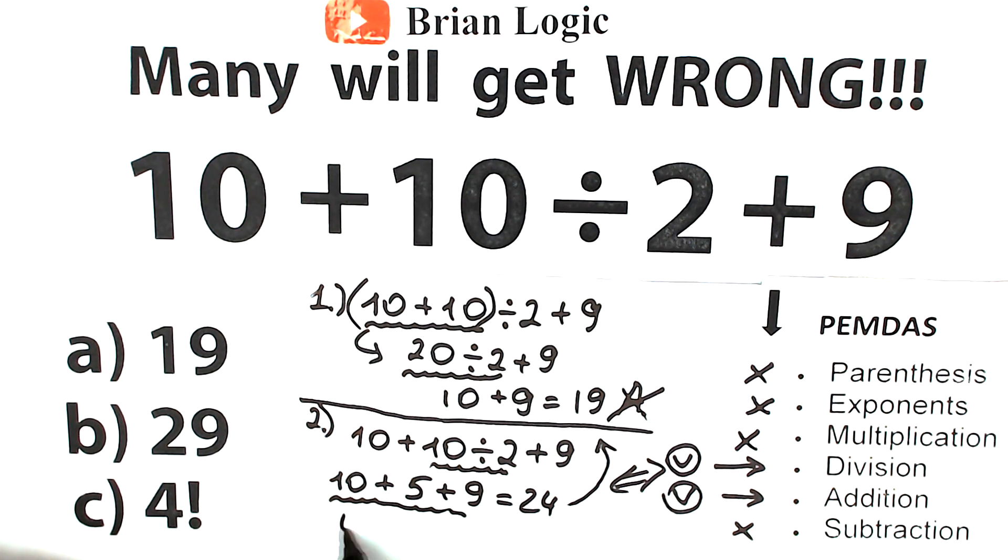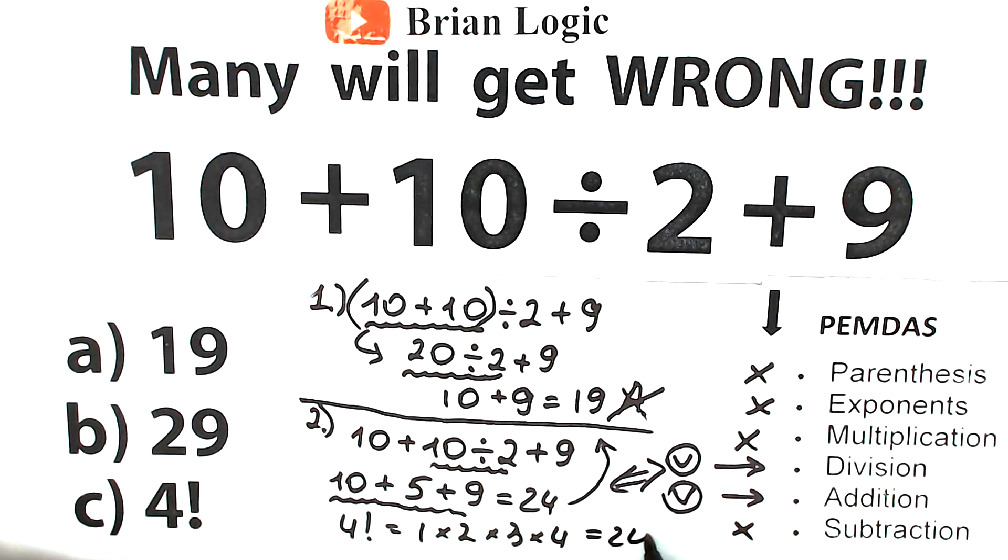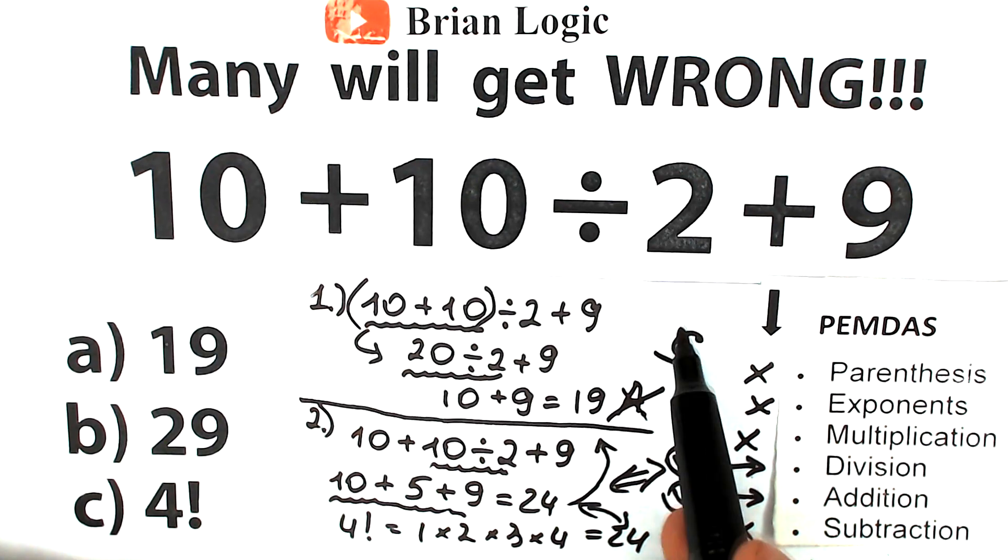Let's look at option C: 4 factorial (4!). Let's remember what factorial means: 1 × 2 × 3 × 4. Many students forget about 4 factorial and choose another option. But we have 4! = 24, the same answer as our calculation. So the correct solution is the second interpretation. The correct answer is 24, and according to our test, option C is the correct answer to this challenge.